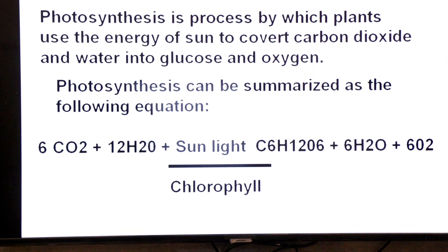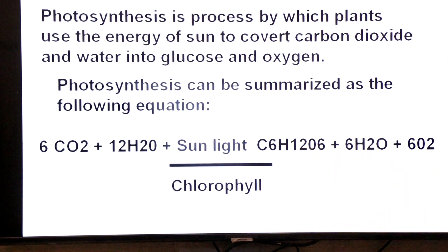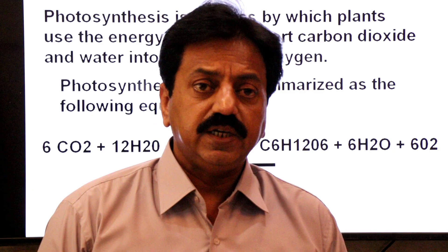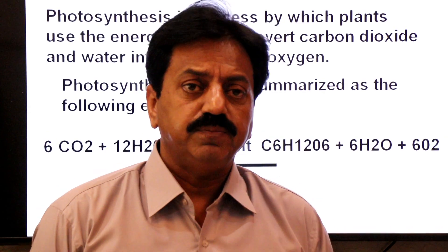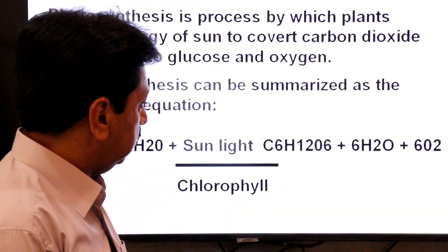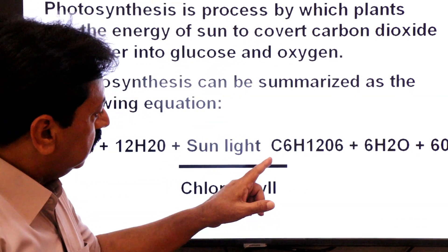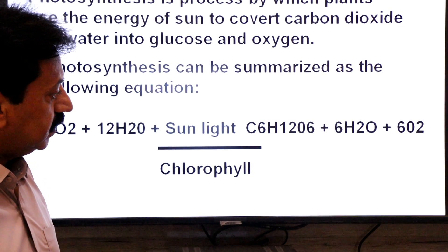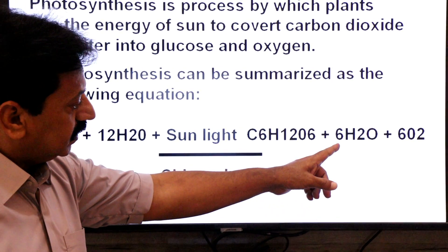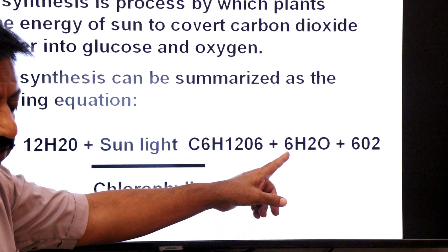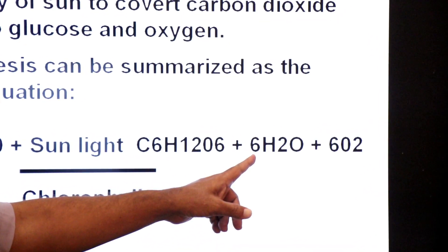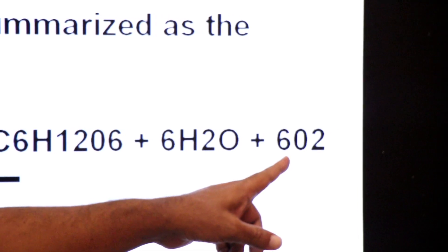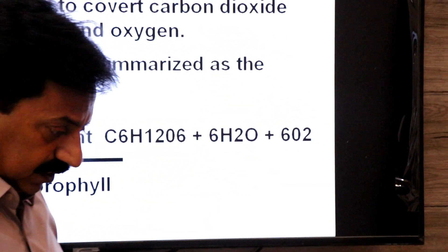There are three products of photosynthesis. The first product is C6H12O6, glucose. The second product is six molecules of water. The third product is six molecules of oxygen.